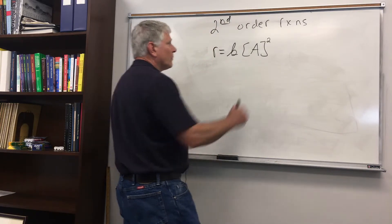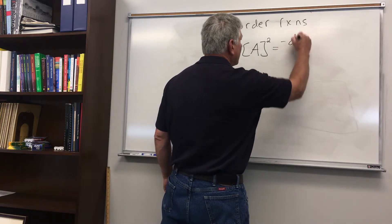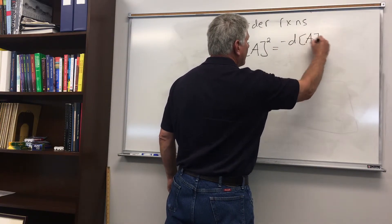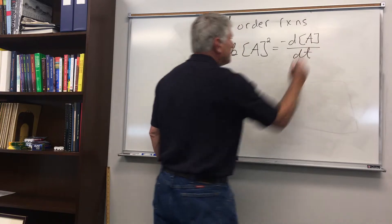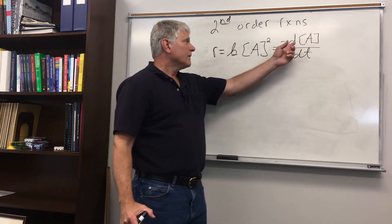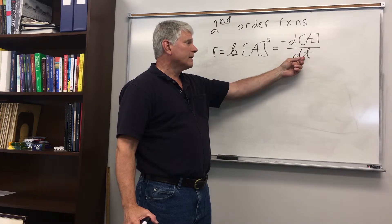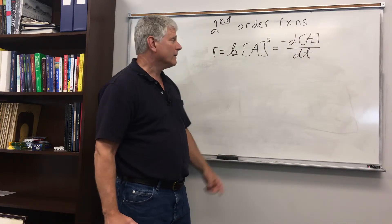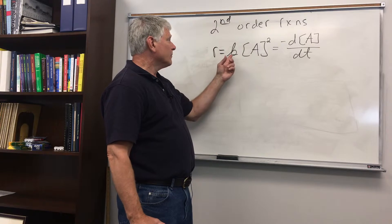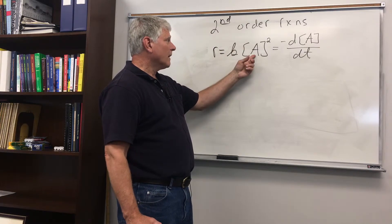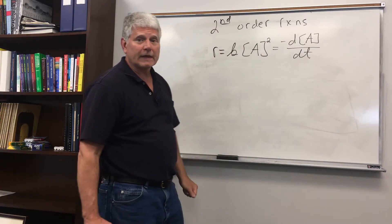So we have two equations for the rate. We have the change in the concentration of A with respect to time. We use a negative sign, so the rate will be positive. That is also equal to the rate constant times the concentration of A raised to the second power.